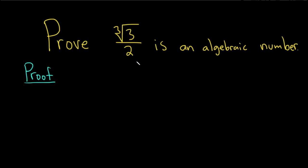Basically what we're going to do is start by letting x be equal to our number, which is the cube root of 3 over 2. And then we're going to construct a polynomial equation with integer coefficients such that this number is a solution to that.